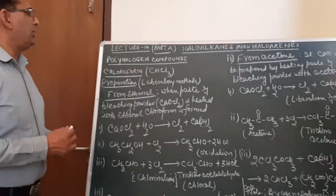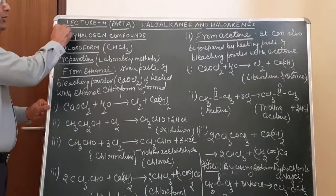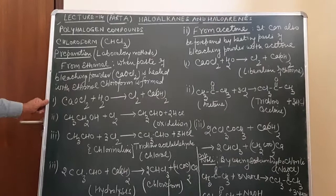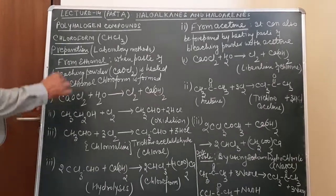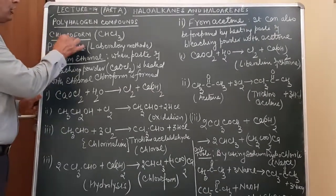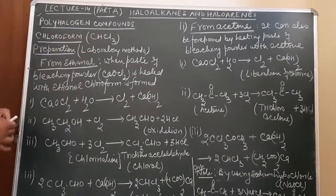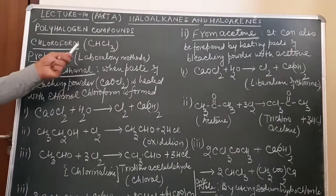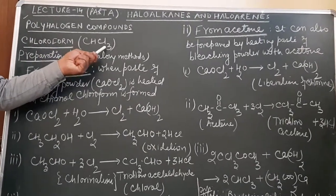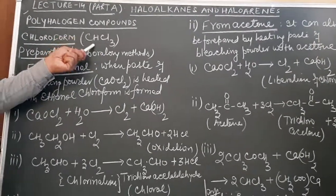Today we start with polyhalogen compounds. One very important polyhalogen compound in the syllabus is chloroform. Chloroform is CHCl3, so it is a trihalogen derivative of Alkane.